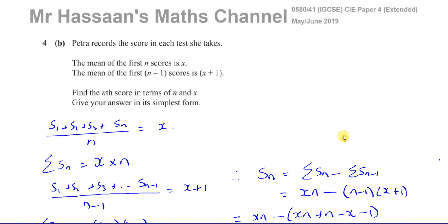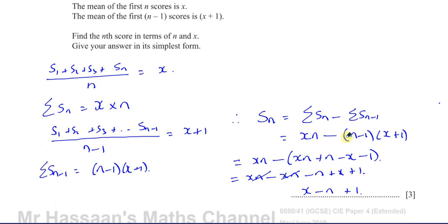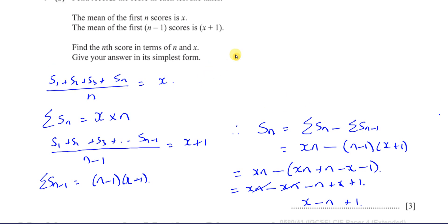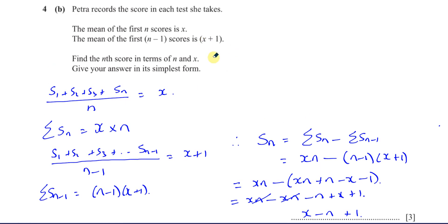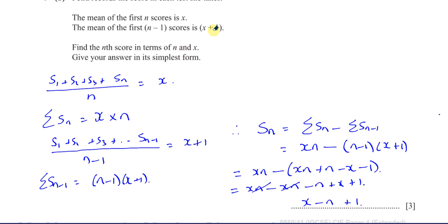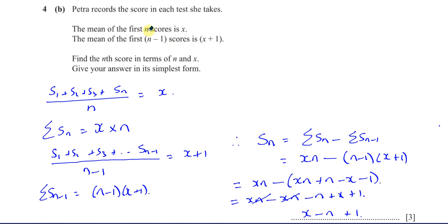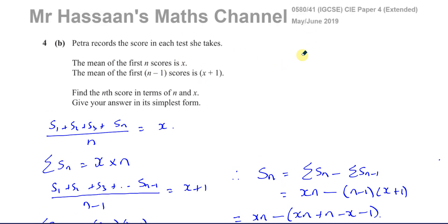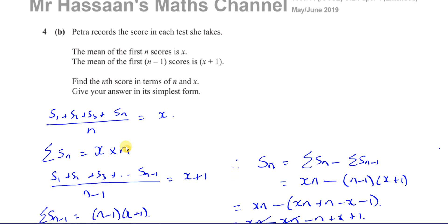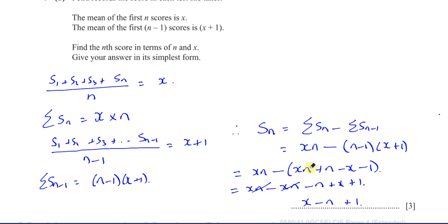It's a bit of an abstract type of question. And as I said, putting real numbers to it in the beginning is a good strategy in these types of questions. Sometimes it's difficult to think in this abstract way, but if you first imagine a certain number of scores with a given mean and think in terms of real numbers, it helps you picture how to proceed. And whatever you did to solve it that way, you can do the same procedure with the letters — it makes life a bit easier.